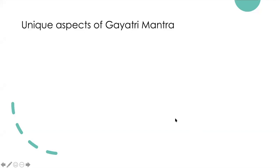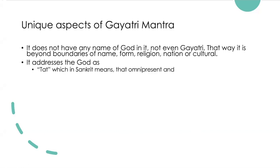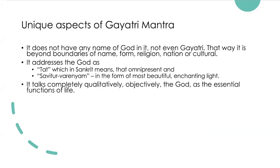Unique aspects of the Gayatri mantra: it does not have any name of god in it — not even Gayatri. That way it is beyond boundaries of name, form, religion, nation, or culture. It addresses God as 'that which' — in Sanskrit meaning the omnipresent — and Savithur Varinam, meaning in the form of the most beautiful, enchanting light. It talks completely qualitatively and objectively about God as the essential functions of life.